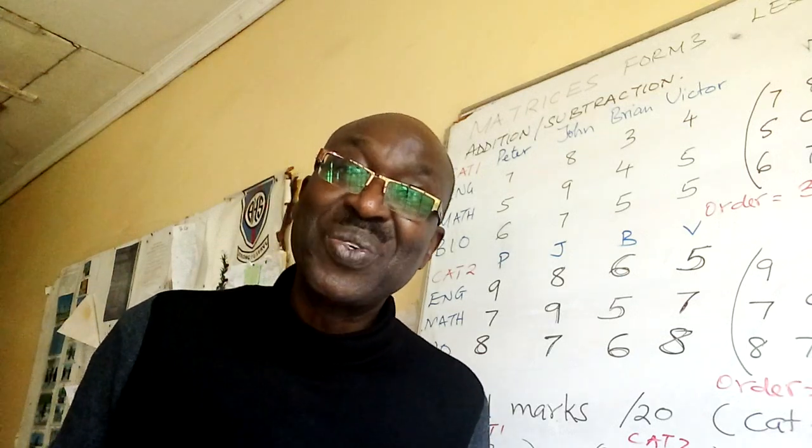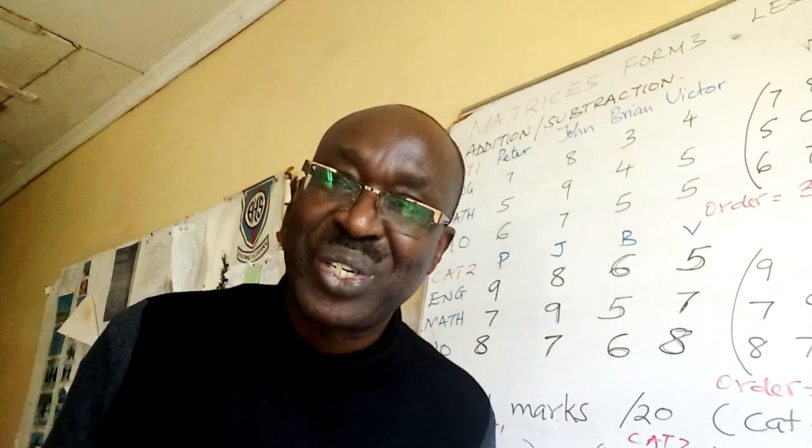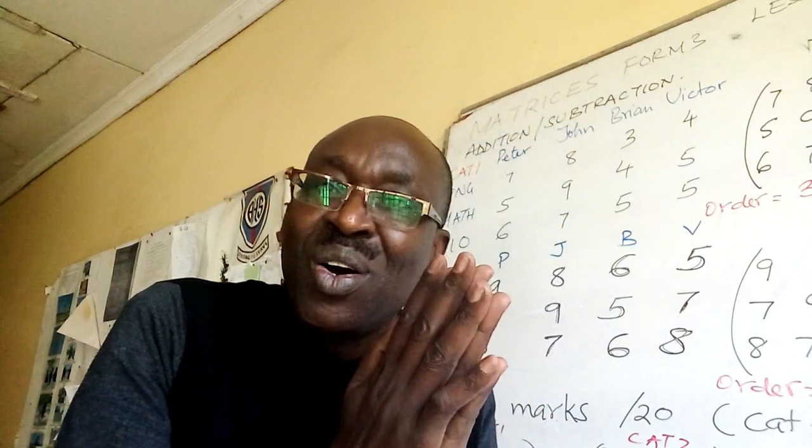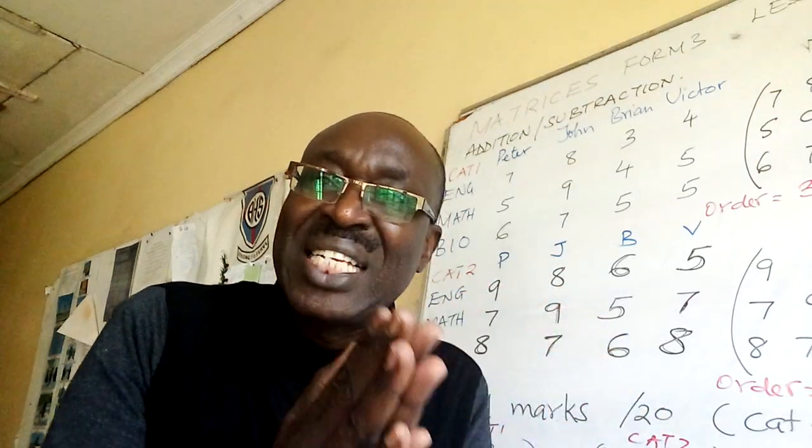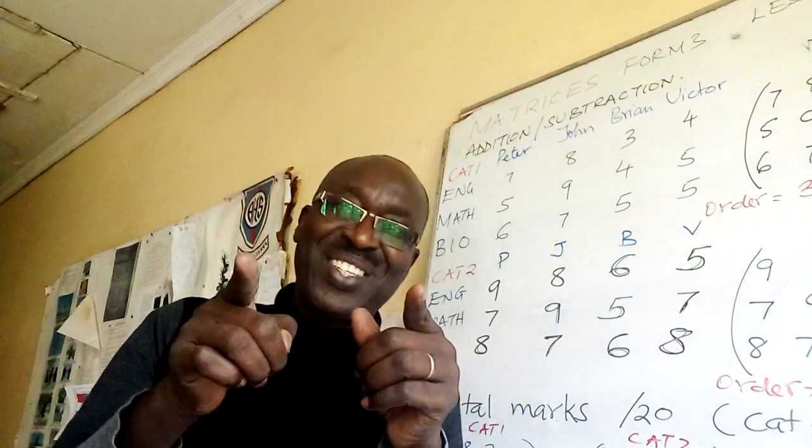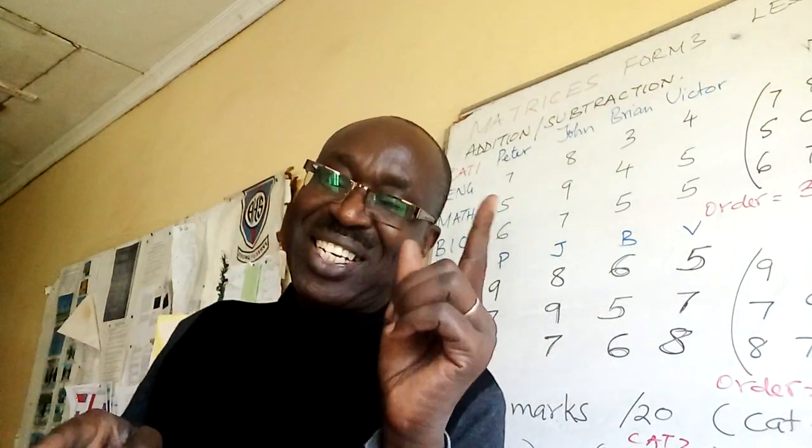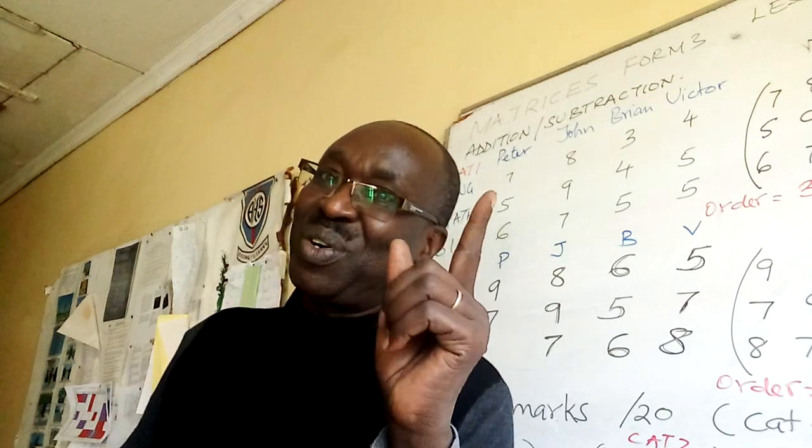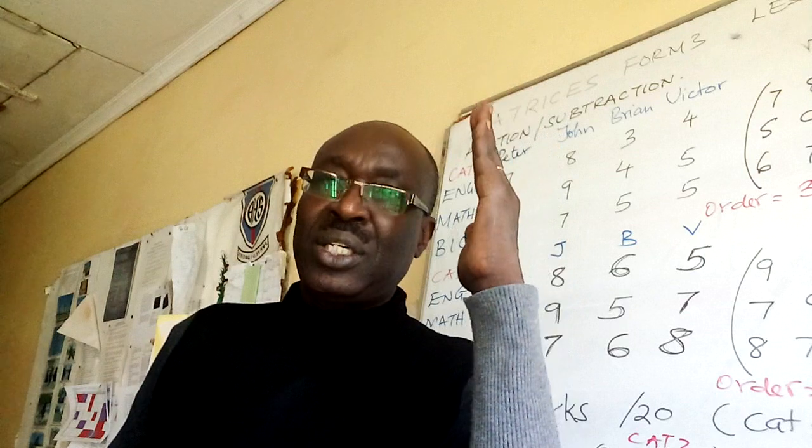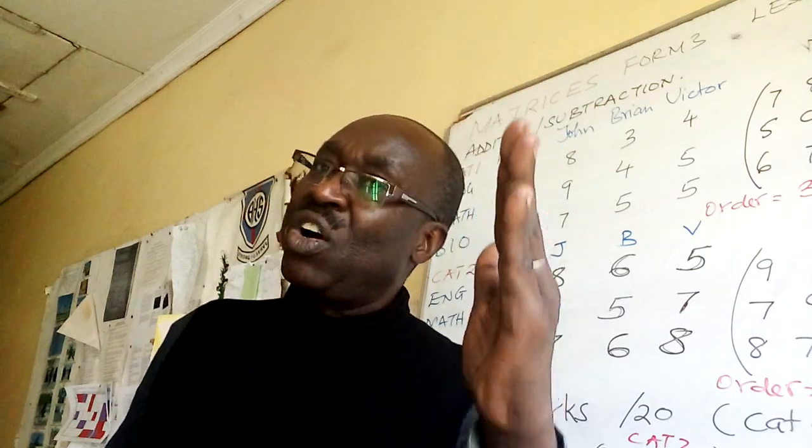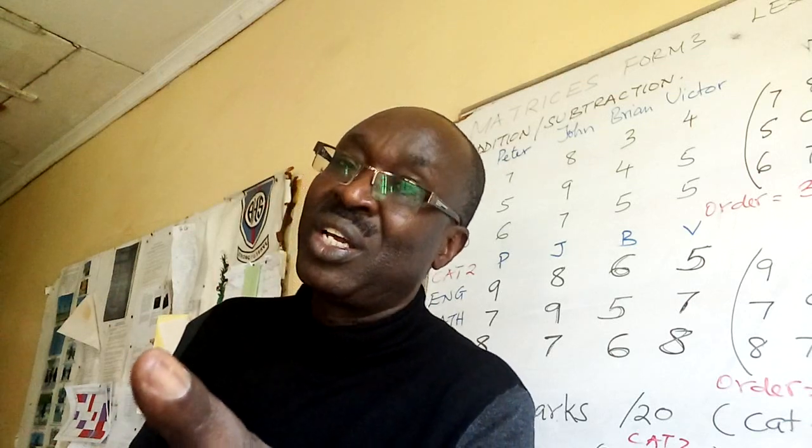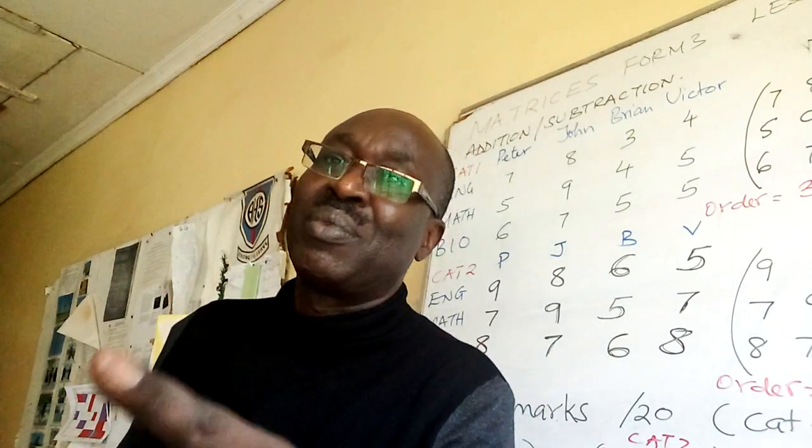Then, it can only be added to another matrix of order 3 by 1. That is what we do, essentially, in translation. Translation. You have OT. Object plus translation gives you image. OT. That is very good. You remember OT in matrices? I did that for form 4. So, here, remember, just add or subtract matrices of the same order. Subscribe for lesson 3. It will come. Bye-bye.